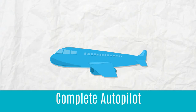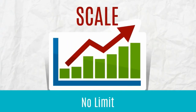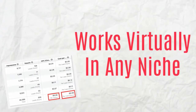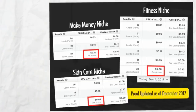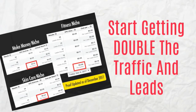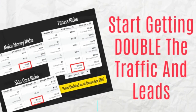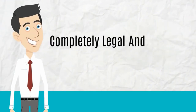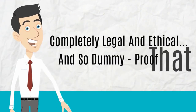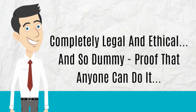The other thing we do is scale. The beauty of this method is that there's no limit to how many traffic machines you can set up, and it works in virtually any niche. After getting your first — which should be pretty easy — simply spend another five dollars to set up a new traffic stream and start getting double the traffic and leads. These traffic strategies are completely legal and ethical, and so simple that anyone can do it. We'll show you inside Tidal Wave Traffic how to build these passive traffic machines.